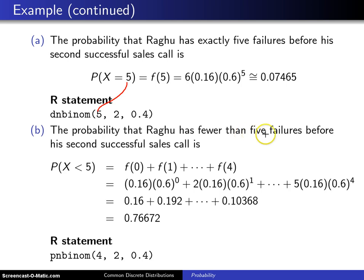The probability that he has fewer than five failures before his second successful sales call is the probability X is less than 5, so that will be f(0) + f(1) + f(2) + f(3) + f(4). Here are those quantities; when you add them up you get 0.76672. Instead of calling dnbinom, which gives you the probability mass function, you use pnbinom, which gives you the cumulative distribution function evaluated at 4 with parameters 2 and 0.4, and that gives you 0.76672.